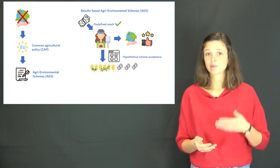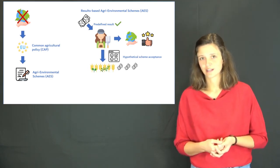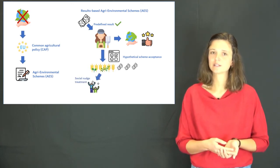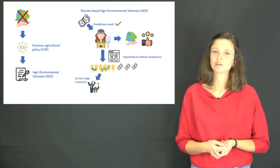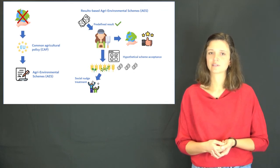Especially, we focused on the role of a social nudge, which means that we told half of the participants they should imagine that two of their colleagues are really satisfied with this scheme.